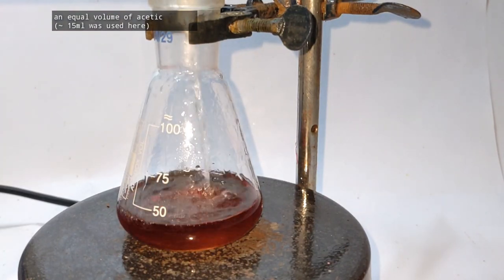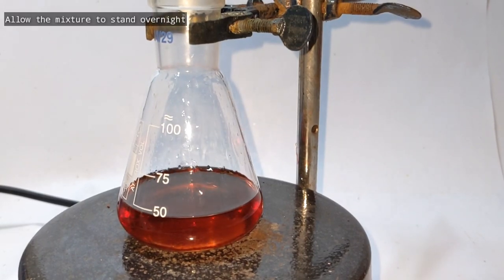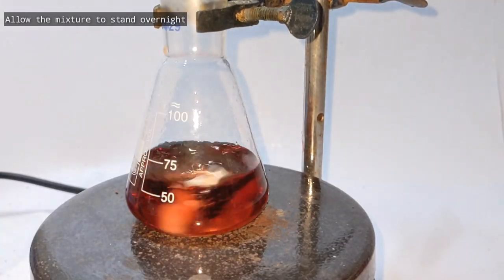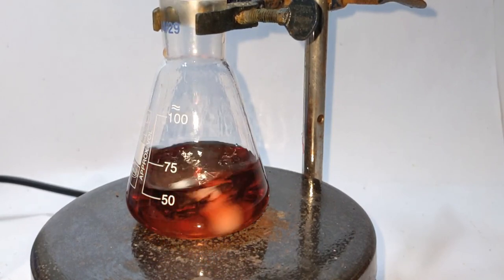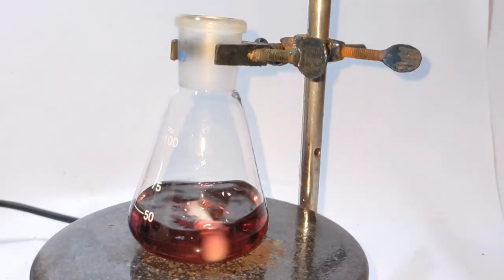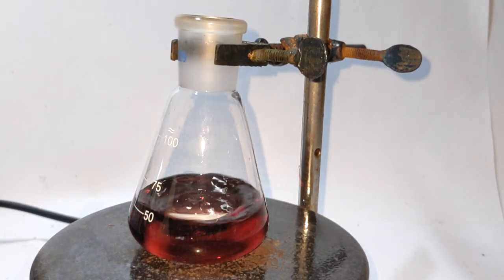Next we add about an equal volume of acetic anhydride to the solution of amine and allow the mixture to stand overnight. Here we added approximately 15 ml. The acetic anhydride would remove any monoalkyl aniline if present. The solution was mixed well and was kept overnight.